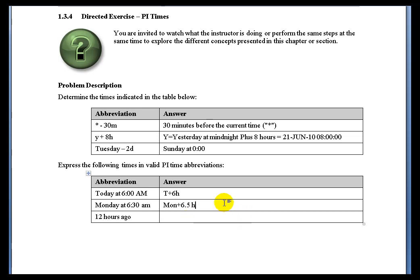You could also use PI time, which would be Monday as the 20th of June at 06:30. And finally, 12 hours ago would simply be the current time minus 12 hours: asterisk minus 12H. That H can be upper or lowercase.